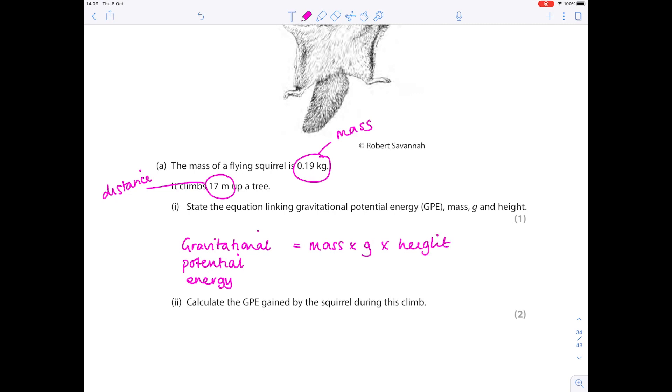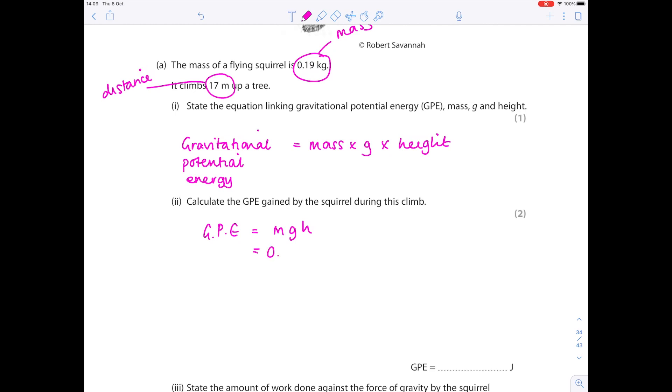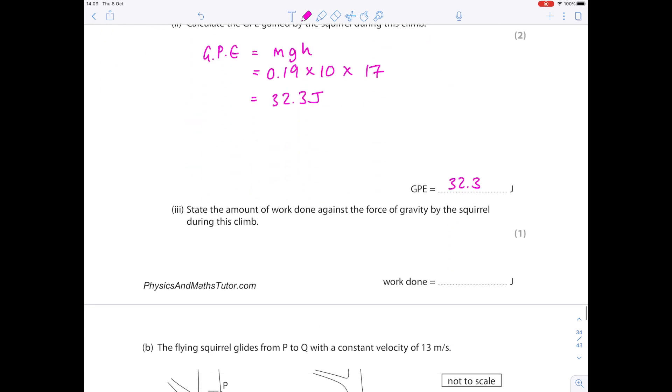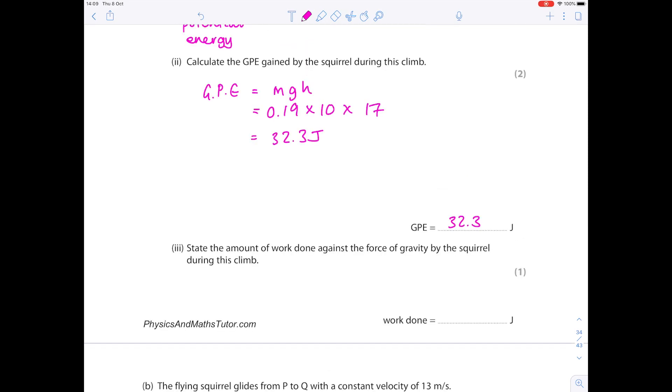Calculate the GPE gained by the squirrel during this climb. We know that it's mass of 0.19. We know gravity on earth is approximately 10. You need to learn that. Height is 17 meters. Pop that into your calculator and you get a value which is 32.3. State the amount of work done against the force of gravity by the squirrel during this time. Remember that work done and energy have the same unit which is joules. It's only worth one mark so the likelihood is that this value is going to be the same and indeed it is.